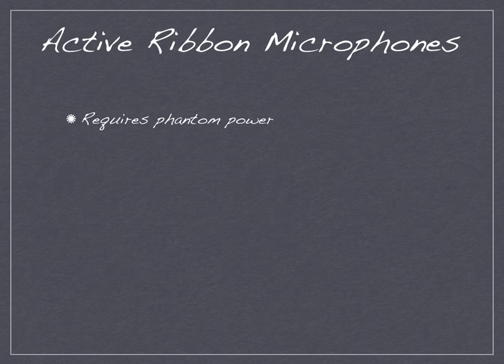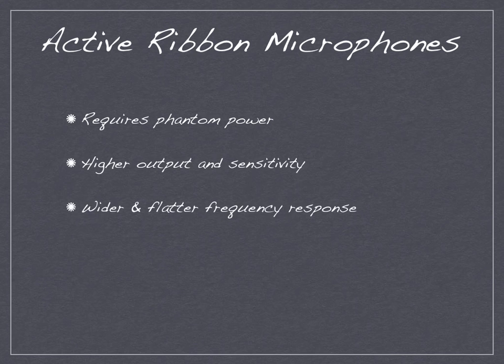There are also active Ribbon Microphones that use an amplifier system, but they require phantom power, which is a power source that runs along the audio cable. They produce higher output and sensitivity, a wider and flatter frequency response, and can handle greater sound levels before distortion.